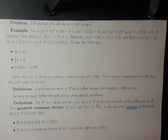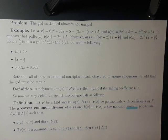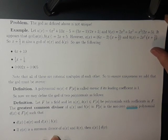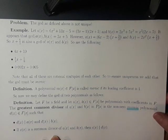So now let's make our official definition of the GCD of two polynomials. Let f be a field and let a of x and b of x be polynomials with coefficients in f. The greatest common divisor of a of x and b of x in the polynomial ring with coefficients in f is the non-zero monic polynomial d of x with coefficients in f such that d of x divides a of x and d of x divides b of x, and if c of x is any common divisor of a of x and b of x, then c of x divides d of x. This ensures that the GCD of two polynomials is unique.